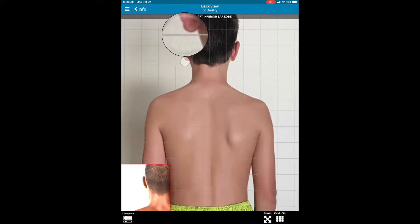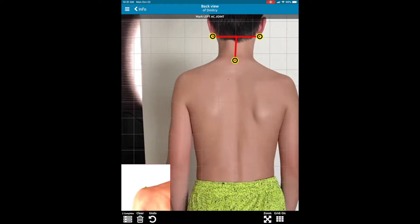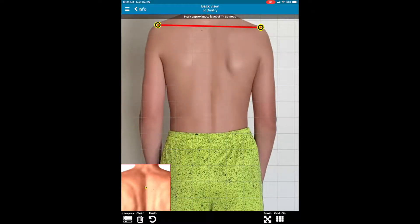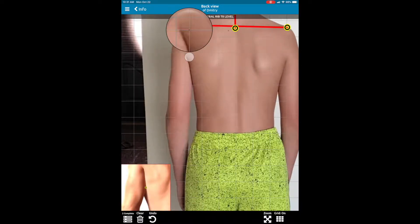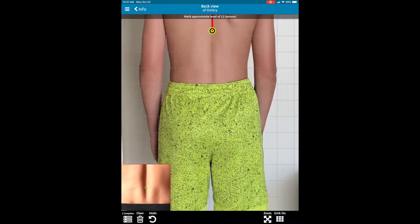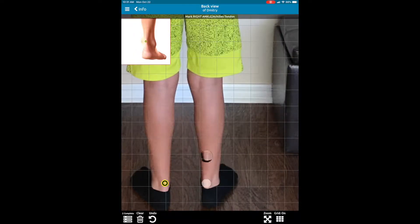So on the back view, we're going to go ahead and do the inferior earlobes. Now, on this view, we recommend, if you can, to palpate and pre-mark some of the spinuses if possible. I'm going to, for purposes here, I'm just going to go ahead and estimate these just to walk you through, because I want to get to the new points here. Then, we're going to go ahead and do approximately a T4 spinus. And we can go ahead and fix these points.